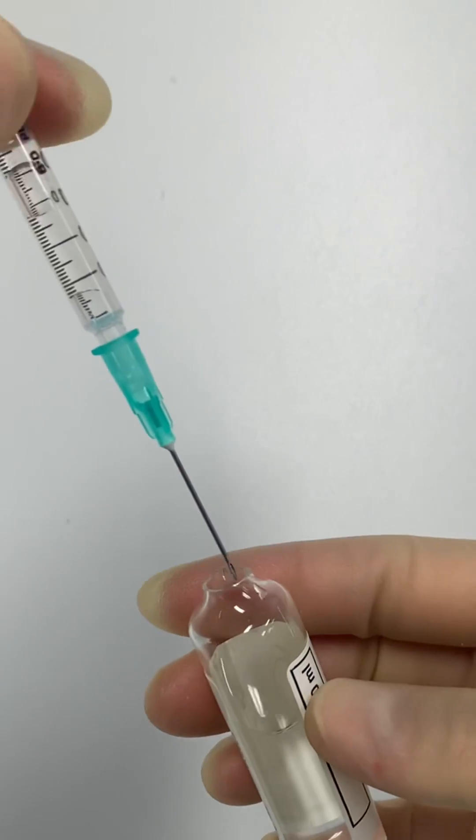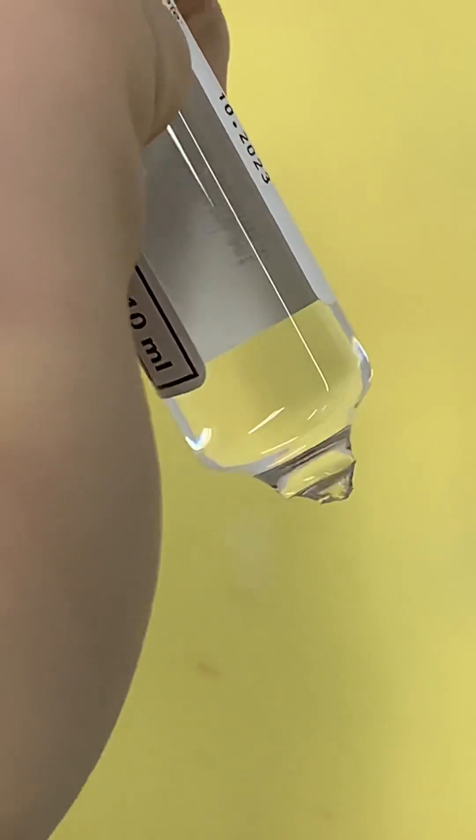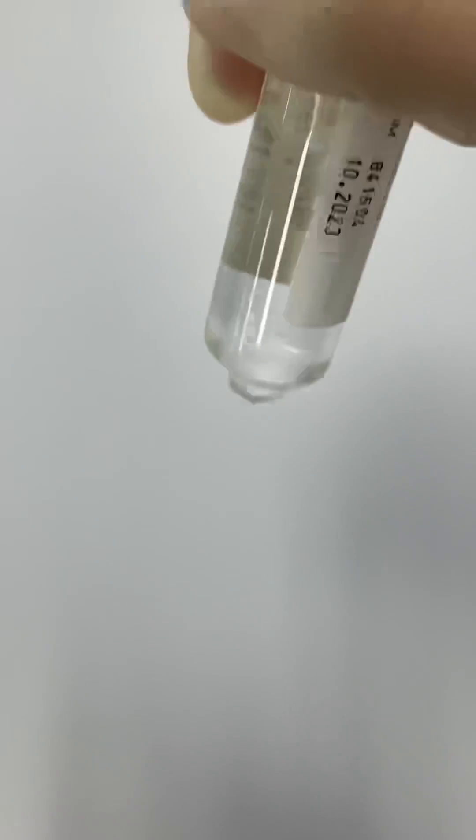If the needle is too short to reach the fluid in the ampoule, you can turn it upside down. And don't worry about spilling the medication because even if you shake the ampoule upside down, nothing will come out.